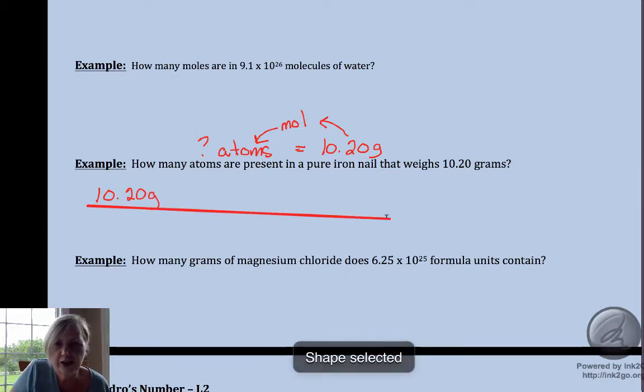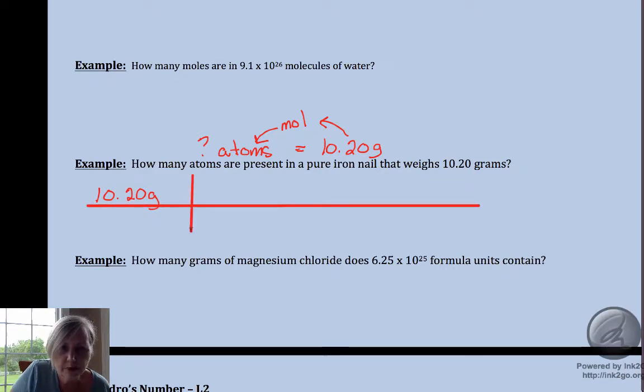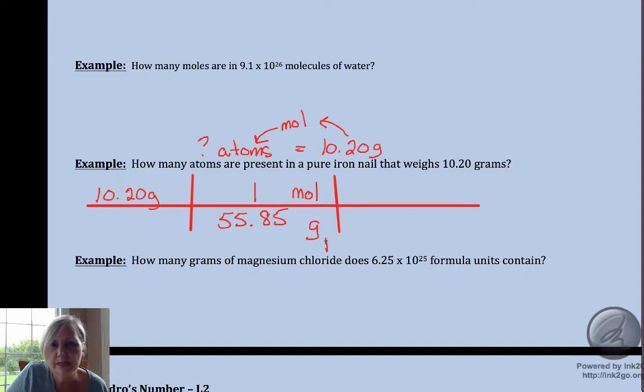So we've got 10.20 grams. Let's go ahead and get our grid here. This is going to be a two-step problem. I'm first going to go from mass to moles. Mass to moles uses molar mass. I want grams to cancel and I'm going to moles, so they're in the numerator. For iron, one mole of iron is 55.85 grams of iron. So now grams of iron—if I stopped my math I'd have moles of iron, but I can't stop my math because the question asked me how many atoms are present.